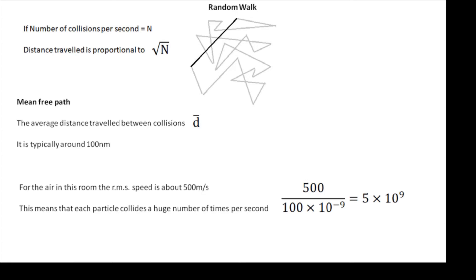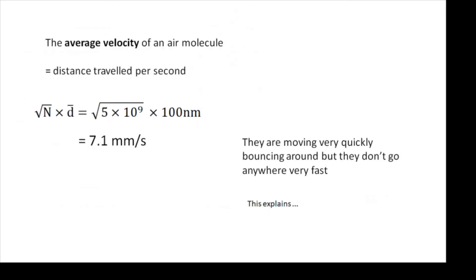And the answer is a lot. If you divide 500 meters by the mean free path you get 5 times 10 to the 9. And that means that on average an air molecule will collide with another air molecule 5 billion times a second.